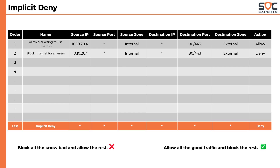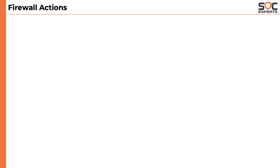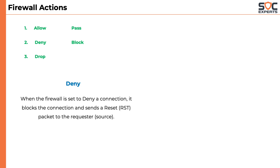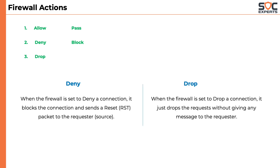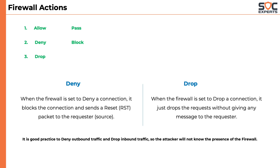Now let's learn about the different actions a firewall can take. We have seen that a firewall can either allow or block traffic. Allow is referred to as 'pass' in some firewalls, and deny is referred to as 'block.' There is a third action the firewall can take, which is drop. When the firewall is set to deny a connection, it blocks the connection and sends a reset packet to the source. When the firewall is set to drop a connection, it just drops the request without giving any message to the source. It is good practice to deny outbound traffic and drop inbound traffic, so the attacker will not know the presence of the firewall.